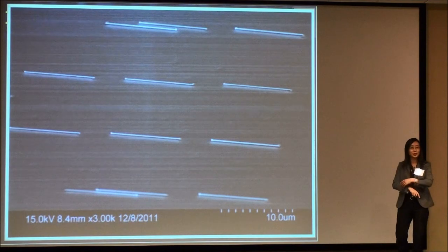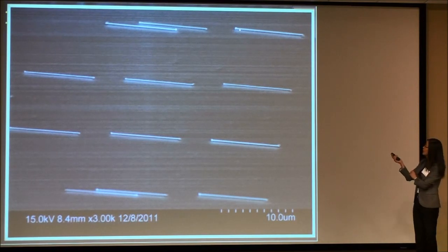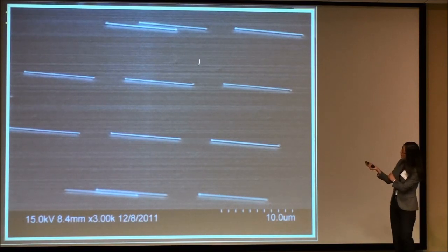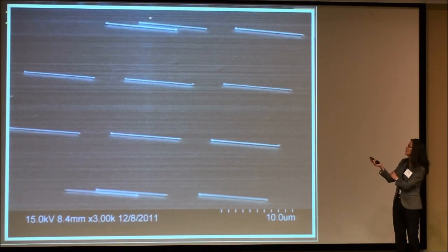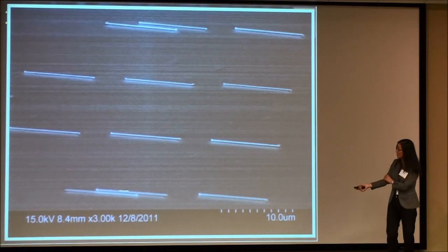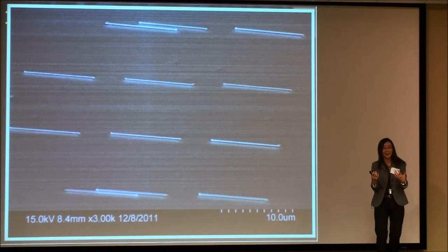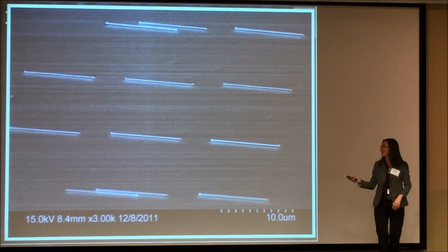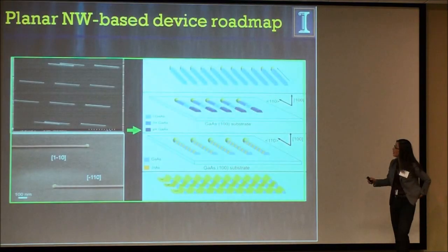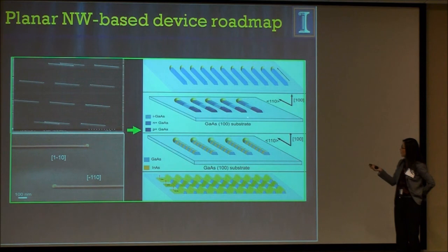Previously I showed randomly dispersed gold particles. These are e-beam patterned gold particles to control the site. The gold is at the tip side, and these are all patterned. But when we finish growth, most wires are aligned in the right places, but some are not. This particular gold particle decided to propagate in the wrong direction instead of the correct direction like all the others — because as I showed, there are two anti-parallel directions and there's a 50% chance they go the other way. This is not acceptable for array-based devices.